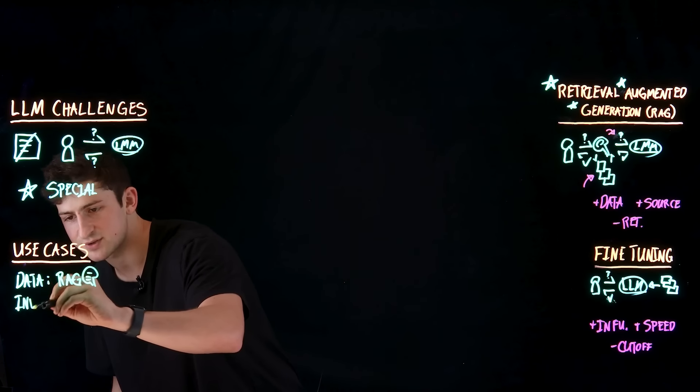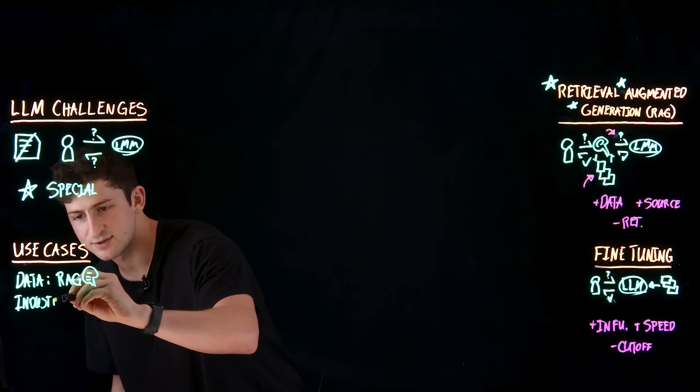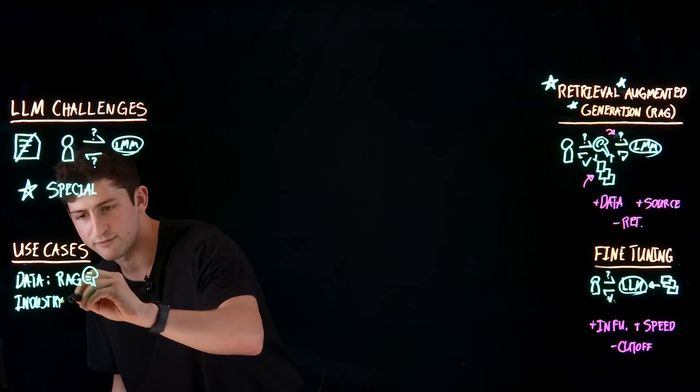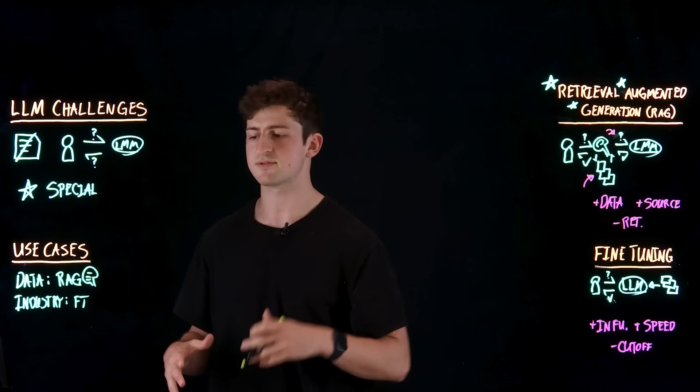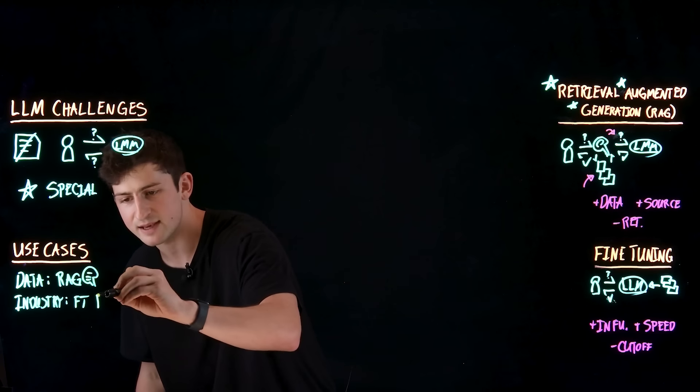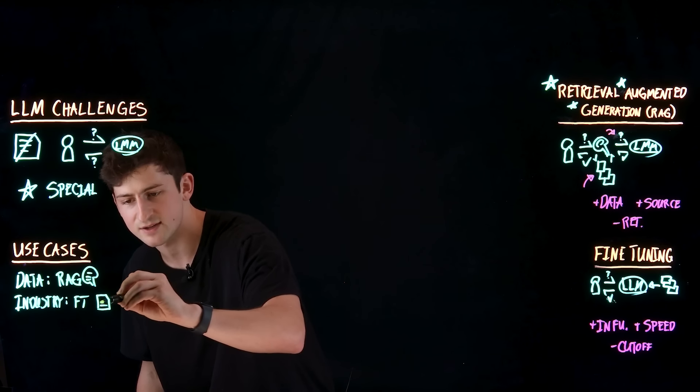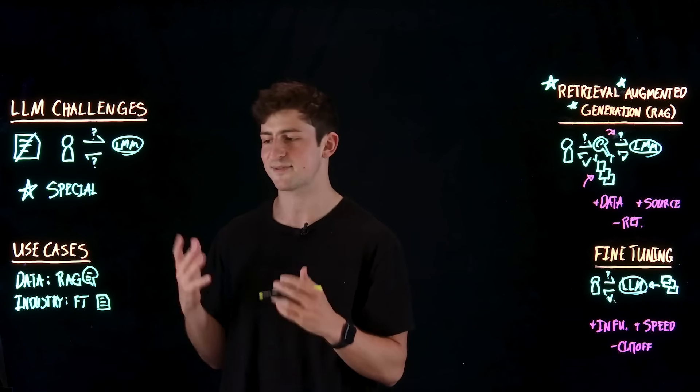For example, a product documentation chatbot where we can continually update the responses with up-to-date information. Now, at the same time, let's think about the industry that you might be in. Now, fine tuning is really powerful for specific industries that have nuances in their writing styles, terminology, vocabulary. And so, for example, if we have a legal document summarizer, well, this could be a perfect use case for fine tuning.